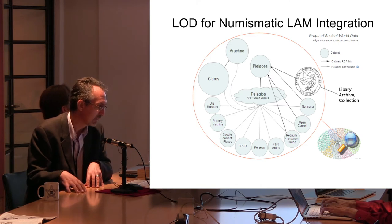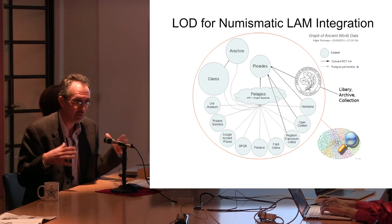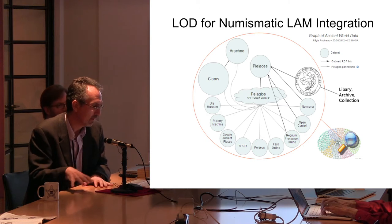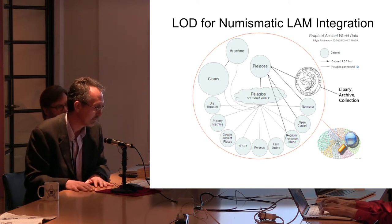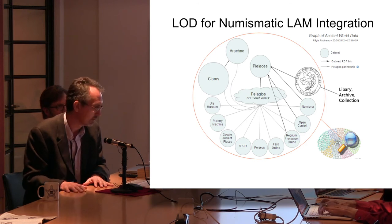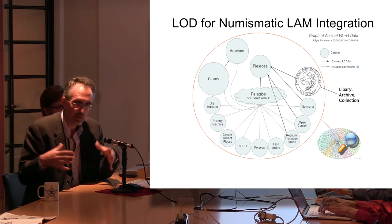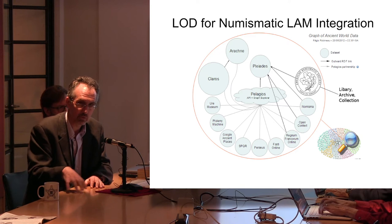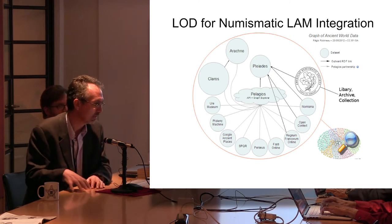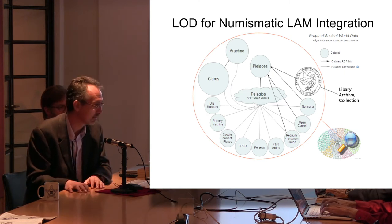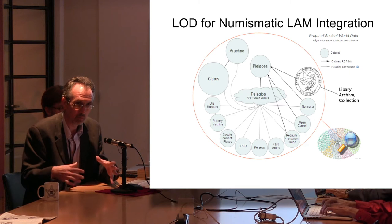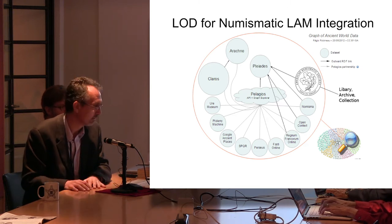In order for us to participate in all of this and link in other information that's out there — which is potentially very useful, if not critical, for what we're doing — we need to be working within these linked open data standards. We are very much a major player in developing these standards as well as participating in linked open data. A lot of what we do in terms of individual items within the collection, as well as the typology — which I'll talk about with Pella — and hoard information, all gets routed through Nomisma through standardized URIs and concepts. Nomisma serves essentially as a node, a way of bringing all of this stuff together.